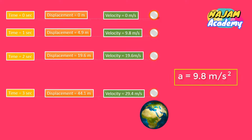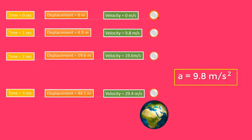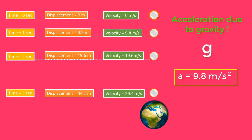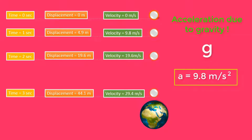In physics, this constant acceleration of free fall is known as acceleration due to gravity. It is denoted by small g. Whenever you see g anywhere in physics, remember that it is acceleration due to gravity and its value is 9.8 m/s².